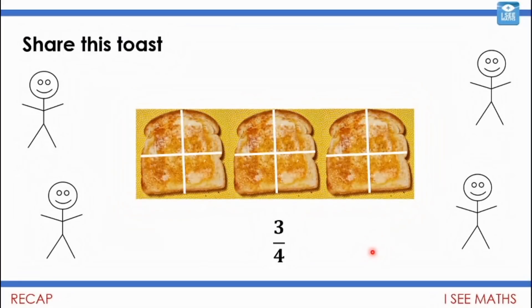Hopefully you'll come up with lots of your own examples and if you do, please send them through. A little recap to start from yesterday. We had a look at four people sharing three pieces of toast. What we could do is split each piece of toast equally into four, so each person has one of those quarters of each piece — they'd end up with three quarters in total.